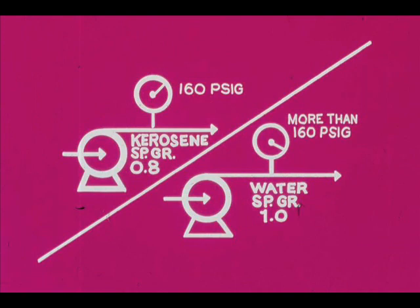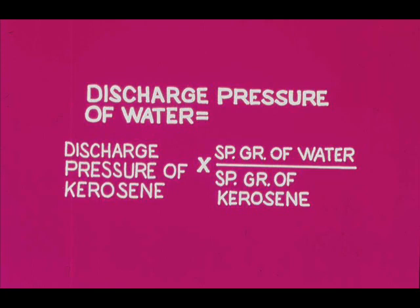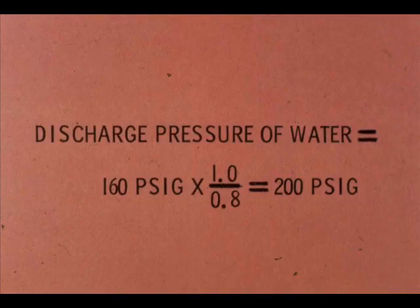Suppose a centrifugal pump has a discharge pressure of 160 psig when pumping kerosene, specific gravity 0.8. Then if it were to pump water, specific gravity 1.0, at the same rate, the discharge pressure would be greater than 160 psig. To calculate the value of this higher discharge pressure, simply multiply the kerosene discharge pressure times the specific gravity of water divided by the specific gravity of kerosene: 160 times 1.0 divided by 0.8 equals 200 psig.